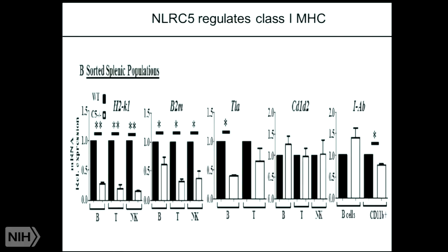The most prominent function of NLRC5 is that it regulates Class I MHC, and it can be found by ChIP assays or chromatin IP assays to be located at the Class I MHC promoter. So we made a knockout and looked at Class I genes — H2K, Beta-2M as an adapter molecule of H2K, and TLA as a non-classical Class I molecule. In every case, if you knock out NLRC5, there is very little Class I expression on B cells, T cells, or NK cells.